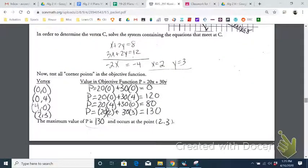So here you can see the four points, four vertices, were plugged into the objective function: (0, 0), (0, 4), (4, 0), and (2, 3). And we see that the point (2, 3) gives us the highest value for P.